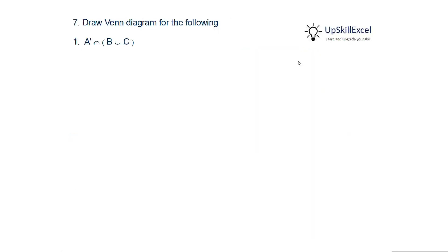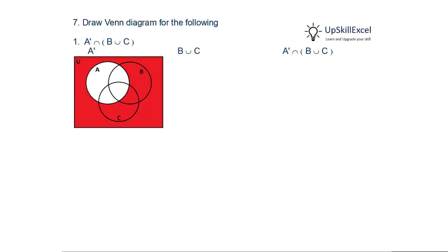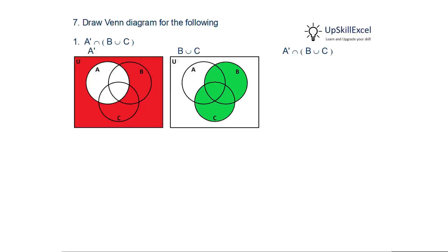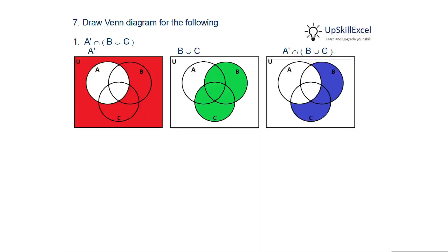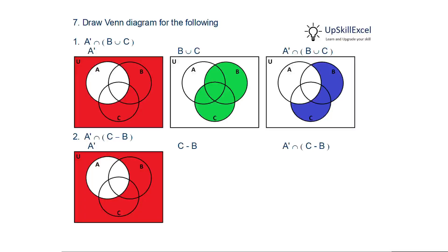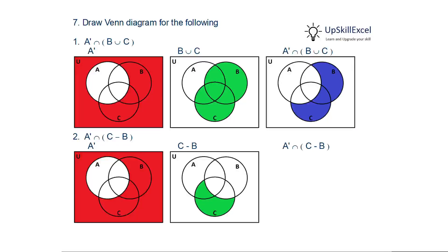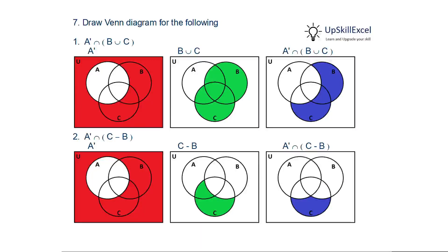Draw Venn diagrams for the following. First: A complement intersection (B union C). We find A complement — the area outside A shown in red — then B union C shown in green, then take the intersection: the overlapping red and green region shown in blue. Second: A complement intersection (C minus B). A complement is shown in red; for C minus B, we find C then remove the intersection with B, leaving the green area. The intersection of both gives the blue shaded portion.